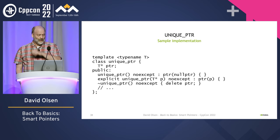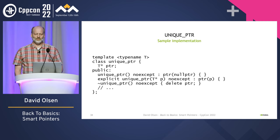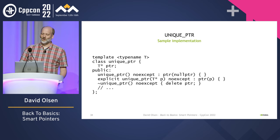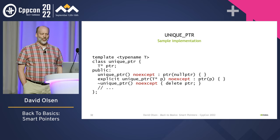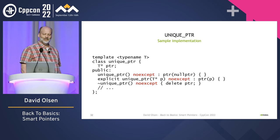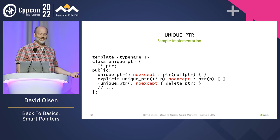To help you develop a mental model of how unique_ptr works, I will show you a sample implementation of the class. This is incomplete in a number of ways but is still useful. Once you understand this sample code, you won't be able to implement unique_ptr, but you should be able to use unique_ptr effectively in your own code. One thing to note is that every unique_ptr member function is noexcept, because unique_ptr never allocates any resources — it only takes ownership of memory that has already been allocated and never does anything that could fail with an exception.